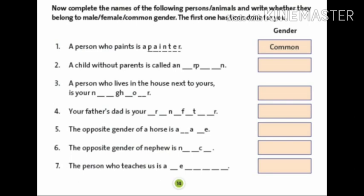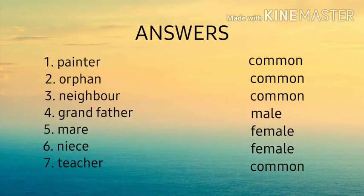Number 7. The person who teaches us is a teacher, and the gender is common gender. Now, check your answers with the help of this slide.